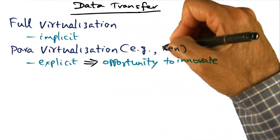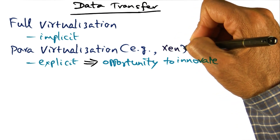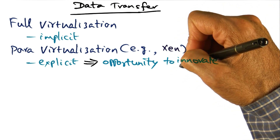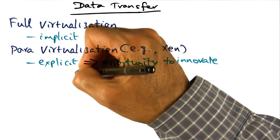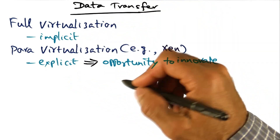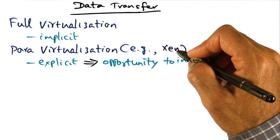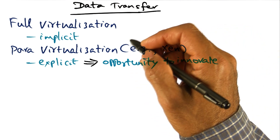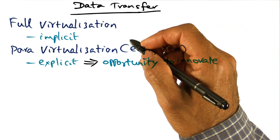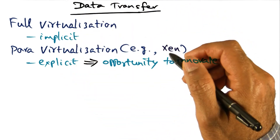In a para-virtualized setting, for example in Xen, there's an opportunity to innovate because you can be explicit about the data movement from the guest operating system into the hypervisor and vice versa. There are two aspects to resource management and accountability when it comes to data transfer.